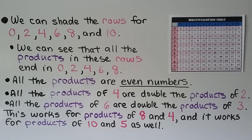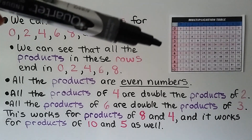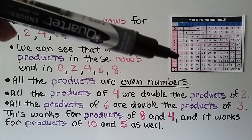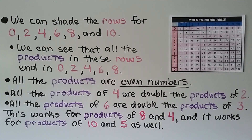We can shade the rows for 0, 2, 4, 6, 8, and 10. Remember, rows go across. For the 0s, 2s, 4s, 6s, 8s, and 10s, I shaded them pink going across. And if we look at the multiplication table, we can see that all the products in these rows end with a 0, 2, 4, 6, or 8. All the products are even numbers.